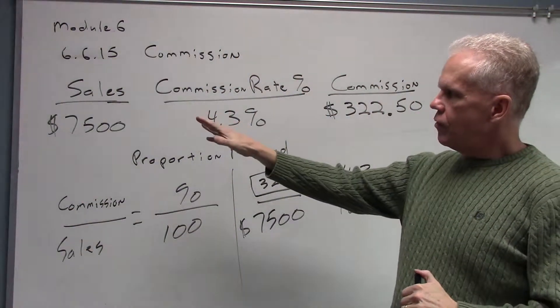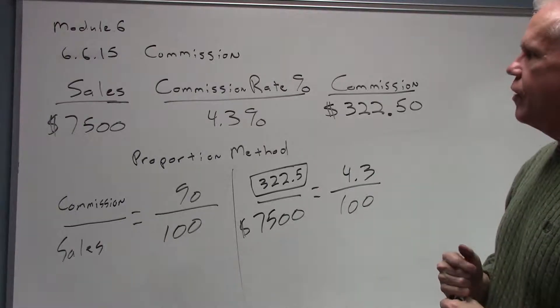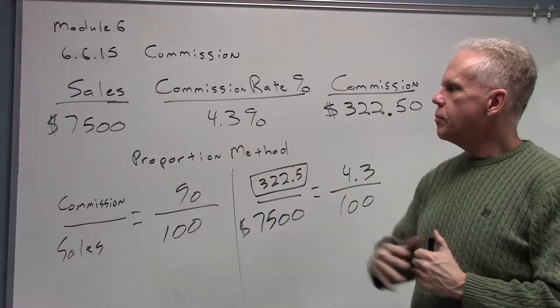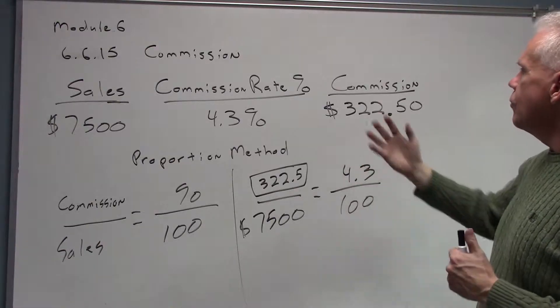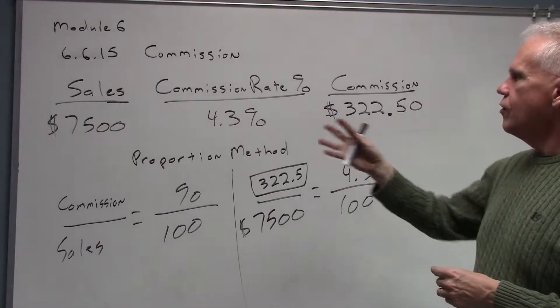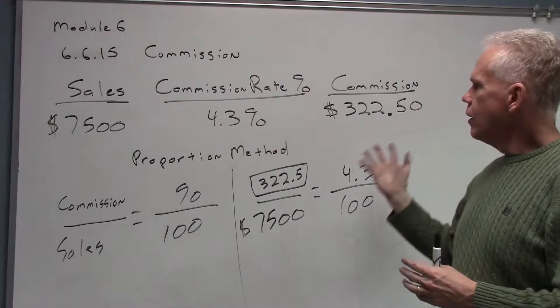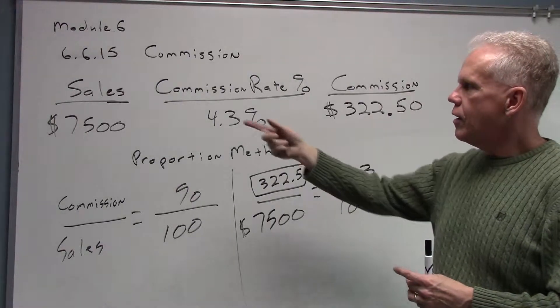The person who has $7,500 in sales working on a 4.3% commission is going to be paid $322.50 for those sales or get to keep that part of what they sold.